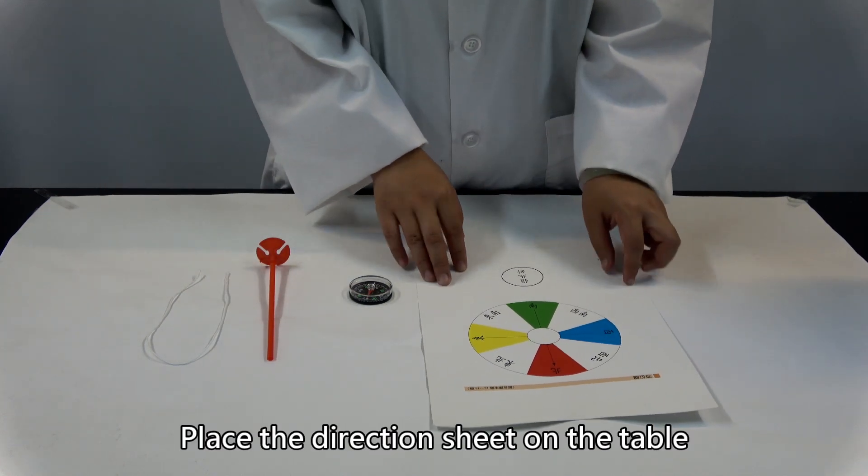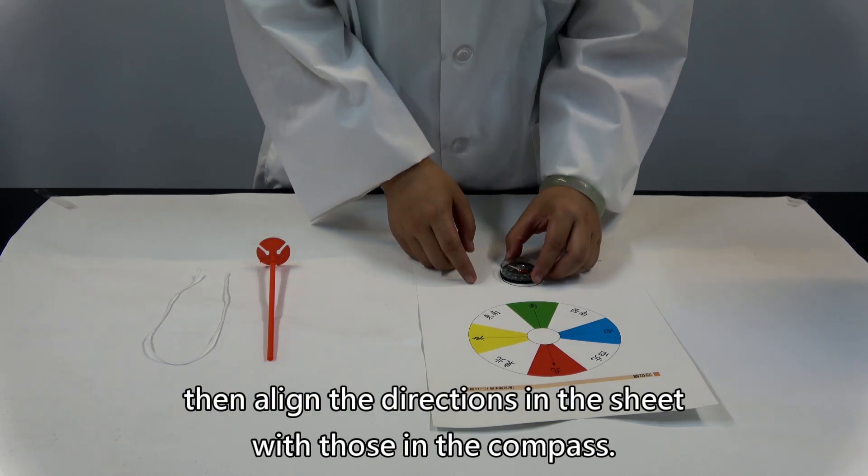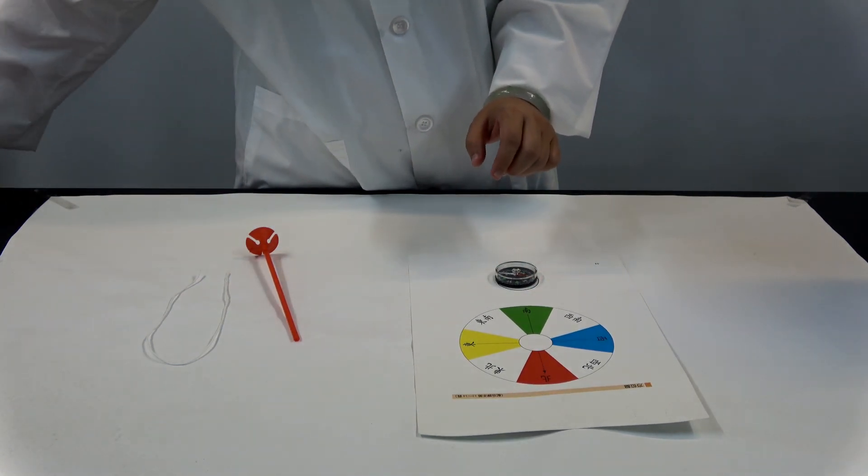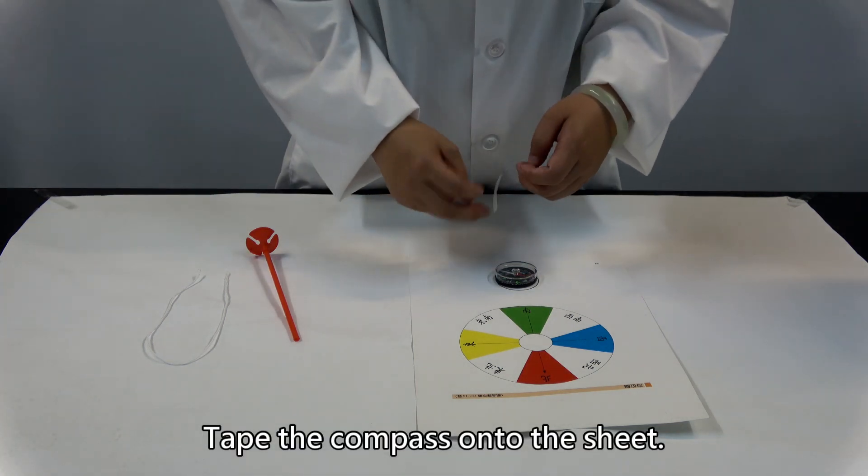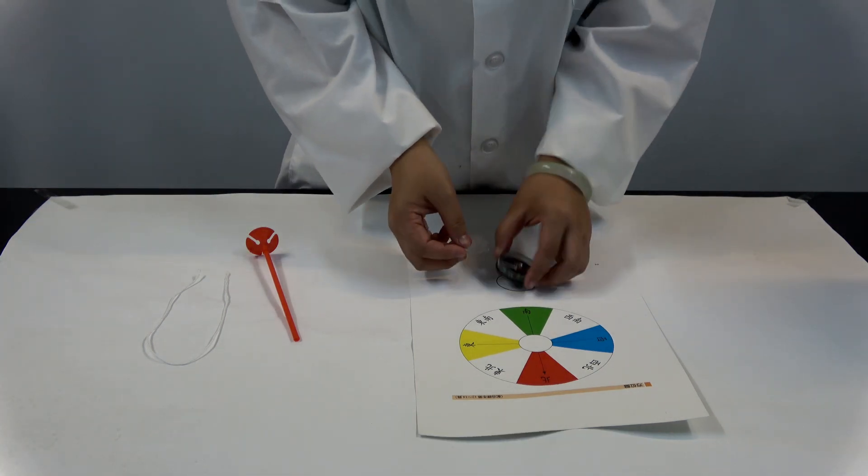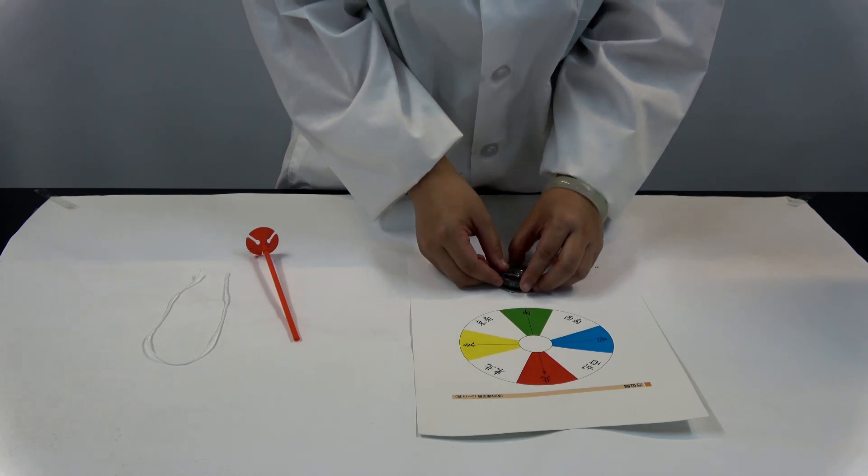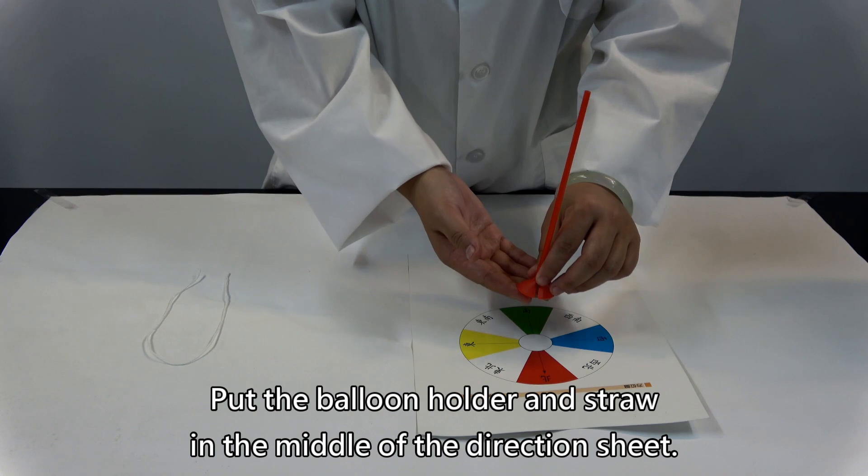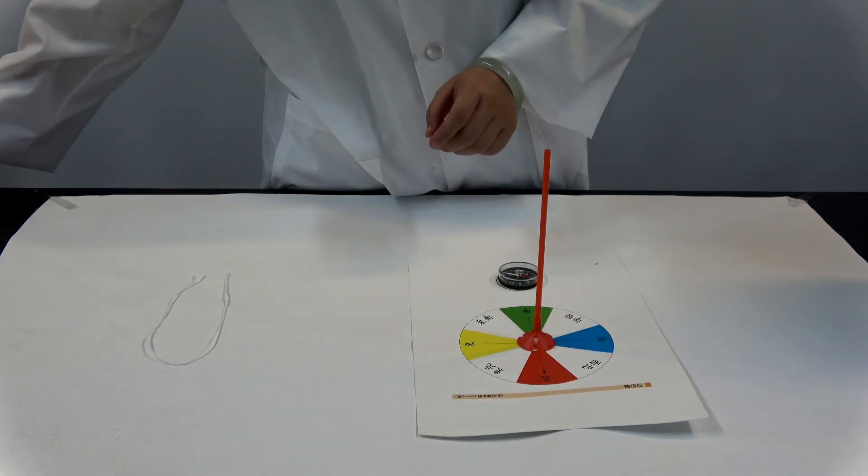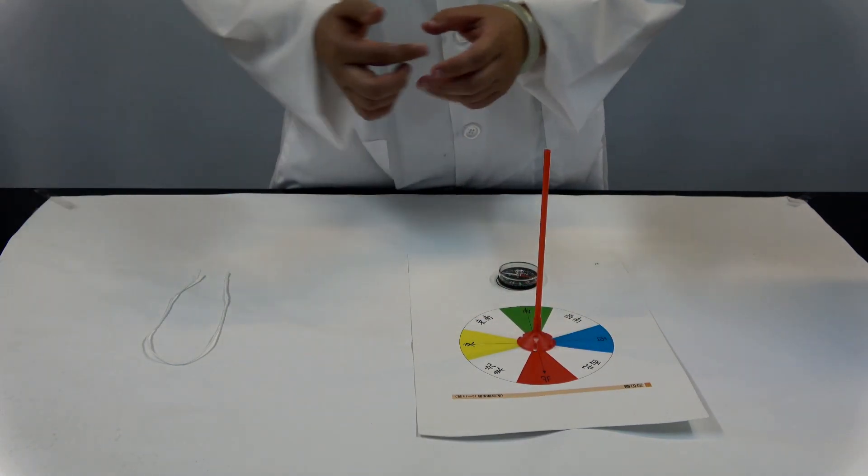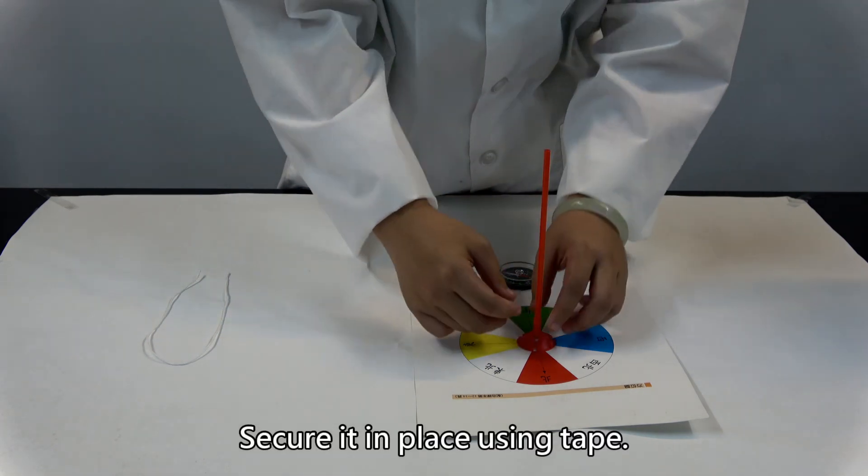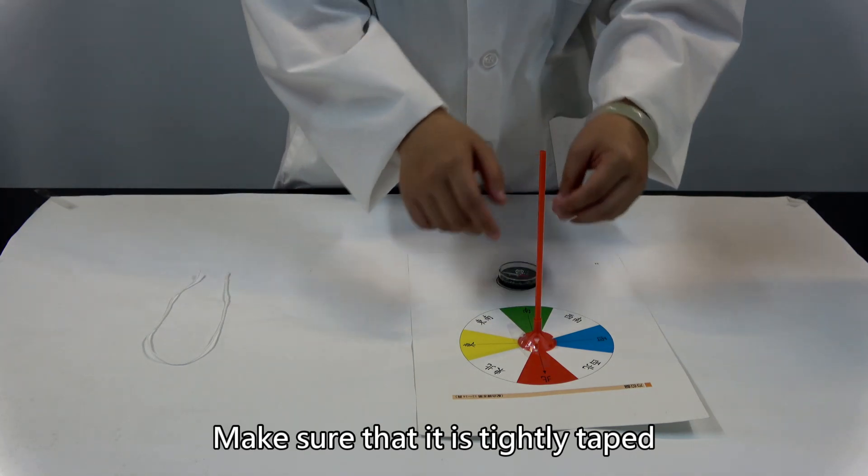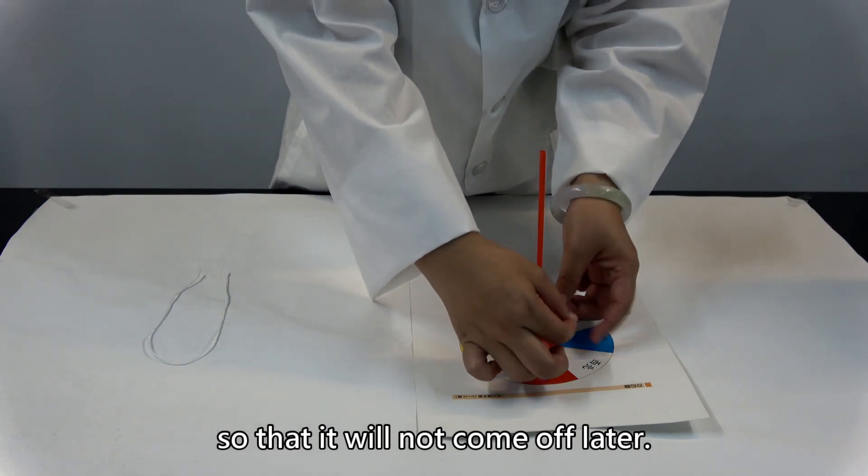Place the direction sheet on the table, then align the directions in the sheet with those in the compass. Tape the compass onto the sheet. Put the balloon holder and straw in the middle of the direction sheet. Secure it in place using tape. Make sure that it is tightly taped so that it will not come off later.